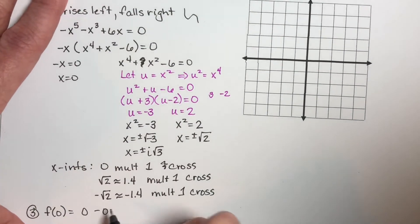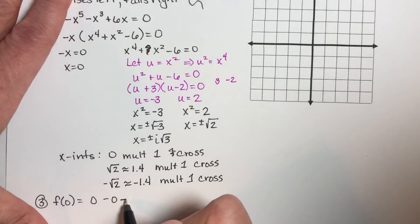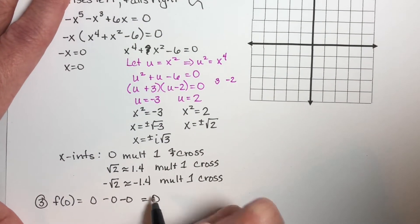Zero cubed is zero. Minus zero to the fifth power is zero. So our y-intercept is zero.